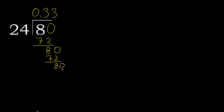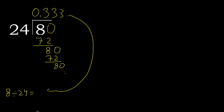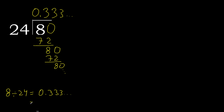Repeat — therefore repeat, therefore 3 repeat. Therefore 8 divided by 24 is 3 repeat, after the point.